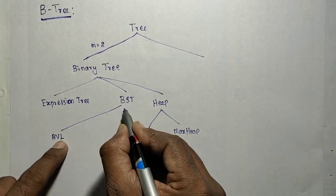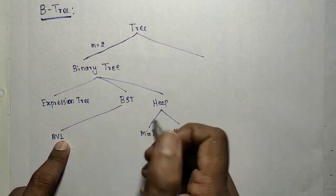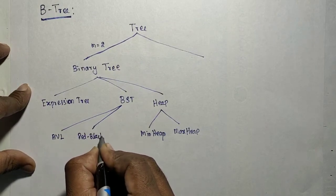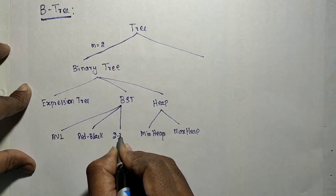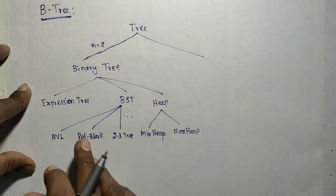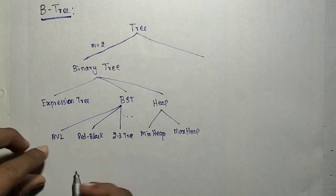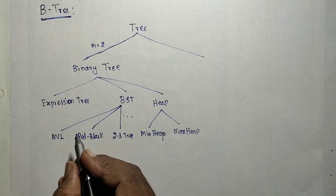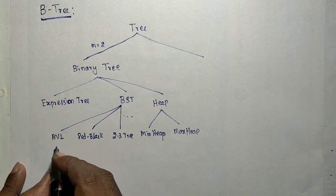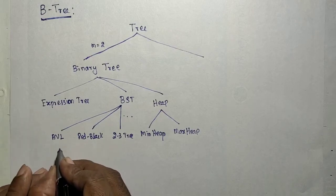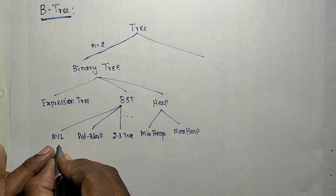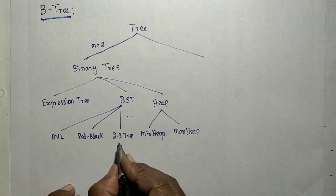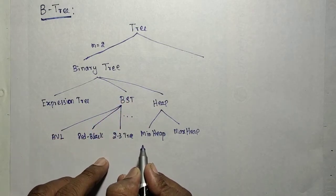The AVL tree is a classification based on balancing height, where the balance factor — the difference between left and right subtree heights — is at most one. Other further classifications on the BST include the red-black tree and the two-three tree, among others.